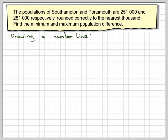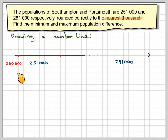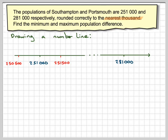So if you draw a number line, we've got the population of Southampton, which is 251,000, and the population of Portsmouth, which is 281,000. These have been rounded off to the nearest thousand. So here we would put 250,500, which is halfway between 250,000 and 251,000. And here we put 251,500, which is halfway between 251,000 and 252,000. So the population of Southampton will lie within that range if it's been rounded off to the nearest thousand.